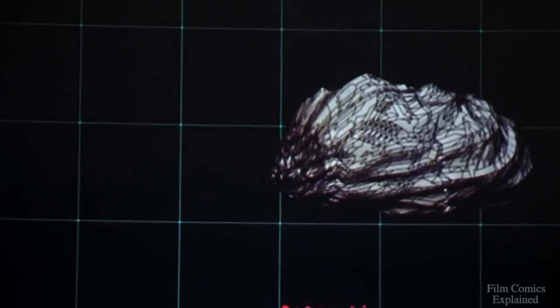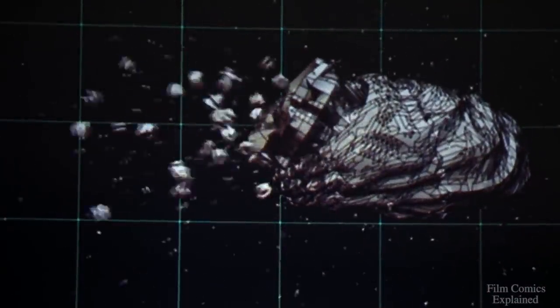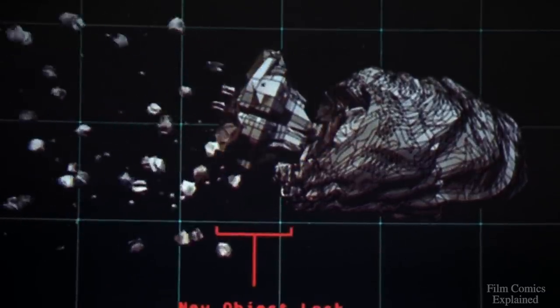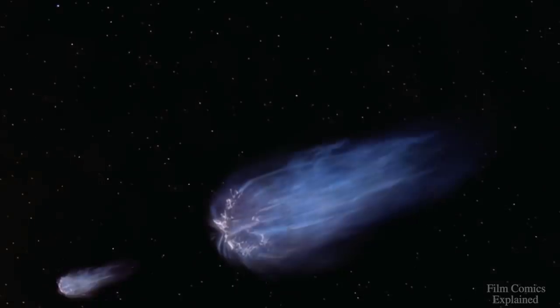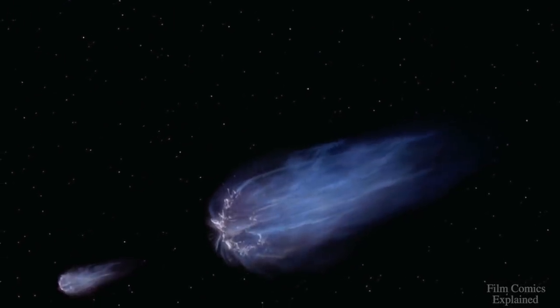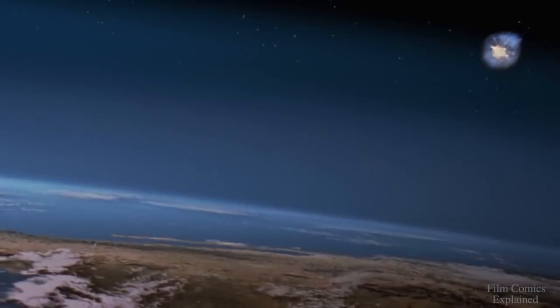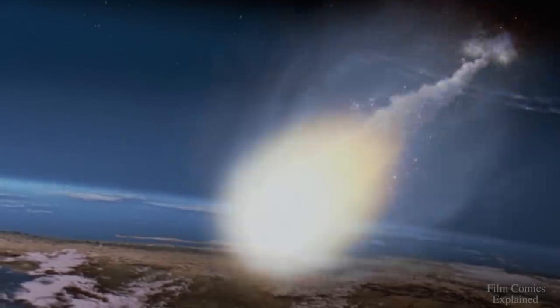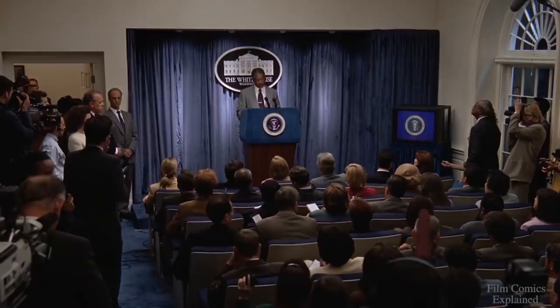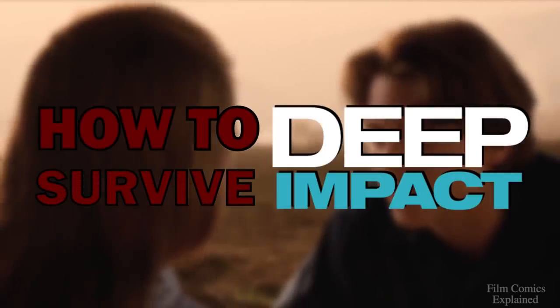While this 200-foot wide asteroid had the potential to wipe out a city, every few million years, an object large enough to destabilize the entire planet comes along. This is the overwhelming cosmic predicament our heroes must contend with in Mimi Leder's 1998 disaster epic, where a 500 billion ton comet, larger than Mount Everest, races to Earth. By exploring the events in the film, the circumstances our characters have to deal with, and the decisions they make along the way, we're going to figure out how to survive deep impact.